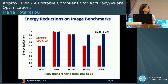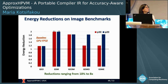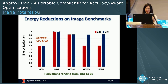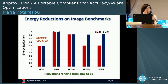Moving on to the image processing benchmarks: the X-axis shows the benchmarks, and the Y-axis shows the energy reduction achieved, with the baseline again being the GPU executing at FP32 precision. The energy reduction in this case ranges from 18% to 8x.